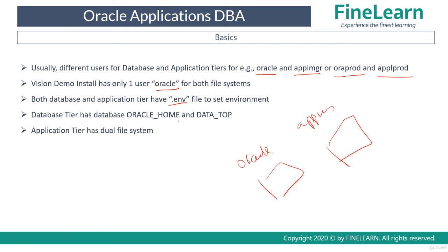Both database and application tiers have one ENV file to set the environment. The database tier has a simple architecture with one Oracle home and one data_top. The application tier has the dual file system. In the next lessons, we will see in detail the application tier file system — the important files and directories — and similarly for the database tier we'll also see the directory structure in detail.